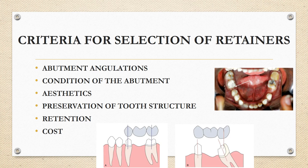For aesthetics: partial veneer retainers may not involve the facial surface, but their use in aesthetic zones can be questionable when teeth are thin and metal can be reflected. Secondary caries is also a possibility because of open margins. In such cases, full veneer retainers are used. Anteriorly, the material should be ceramic because aesthetics are important.